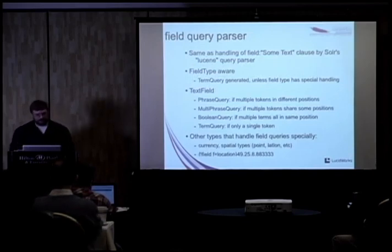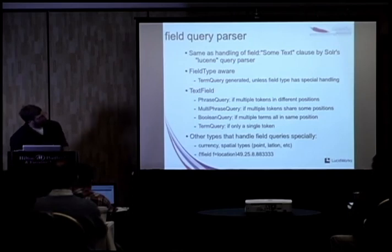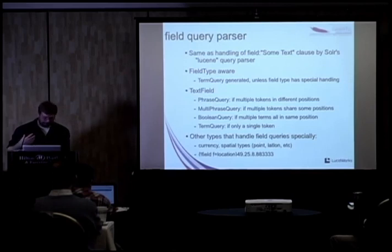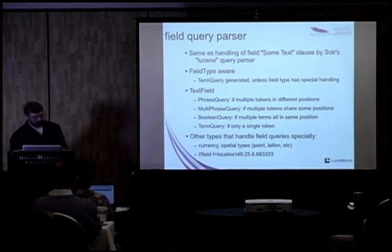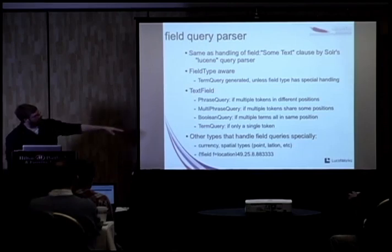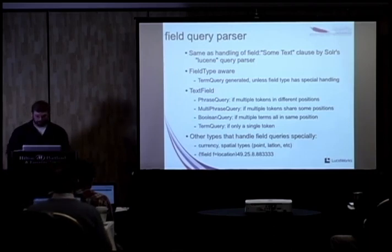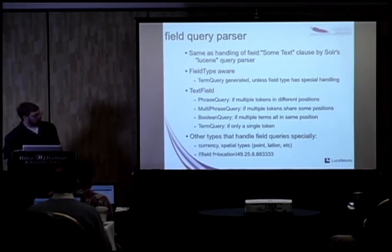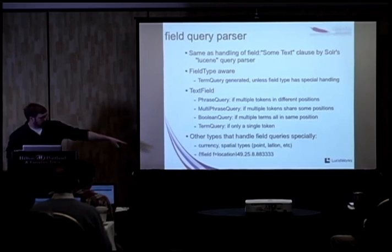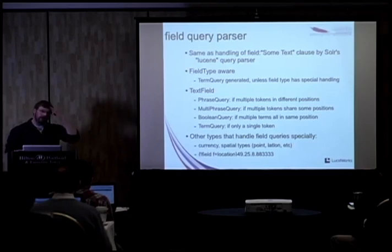There is a field query parser that does field-type awareness — it runs through analysis if it's a text field and looks at the schema to figure out what field type it is, then generates the right query based on the field type. If it's a text field, the type of query it generates depends on how many tokens come out of analysis and their positions. There's also special handling for certain field types — for a location field with lat/long, it creates the right type of query under the covers.